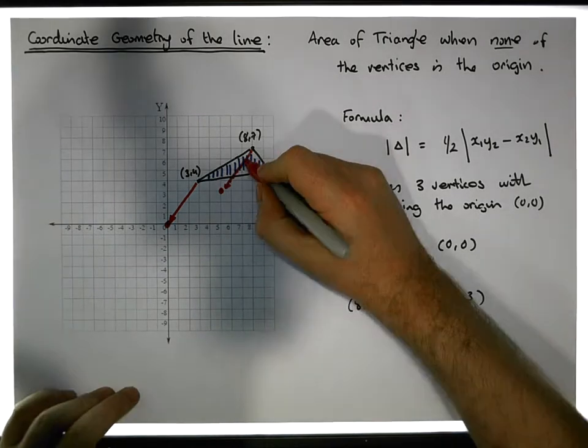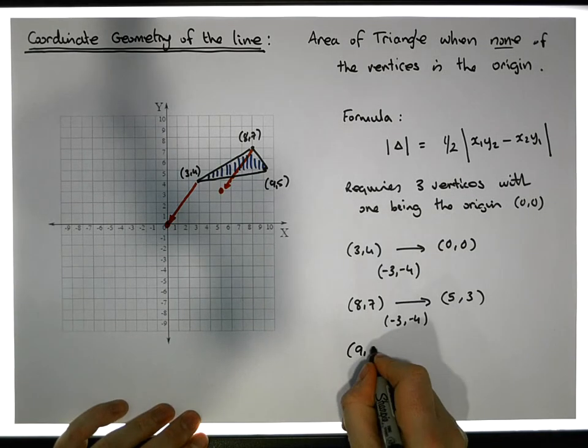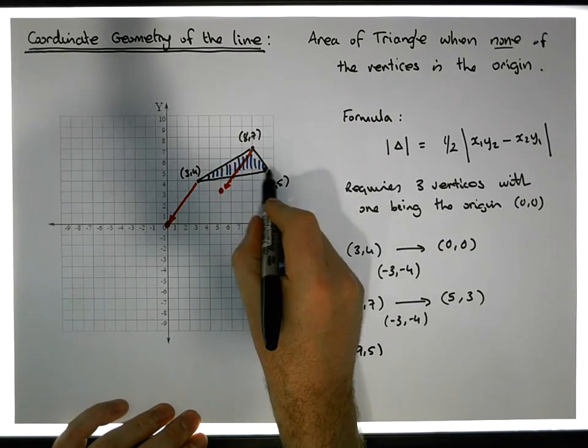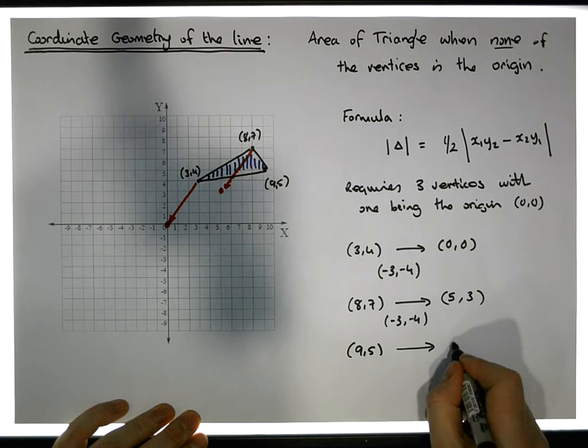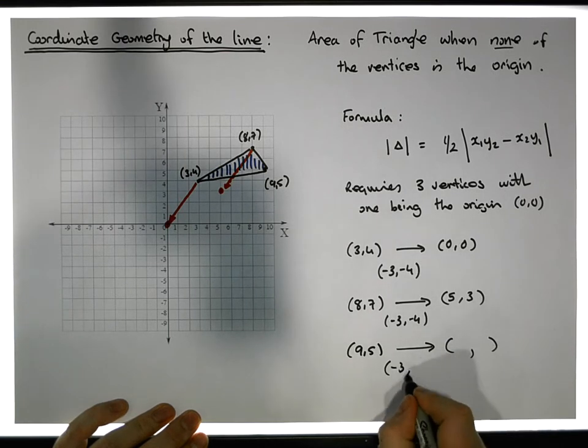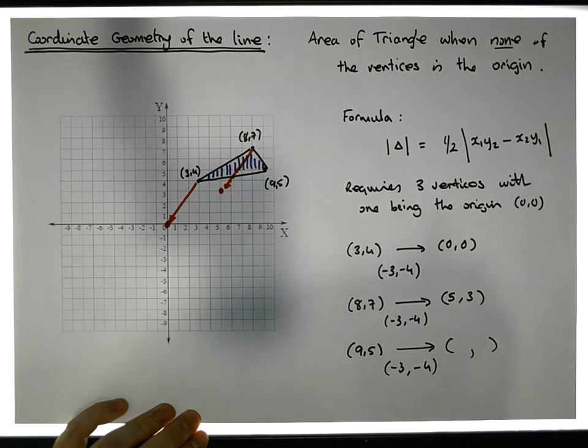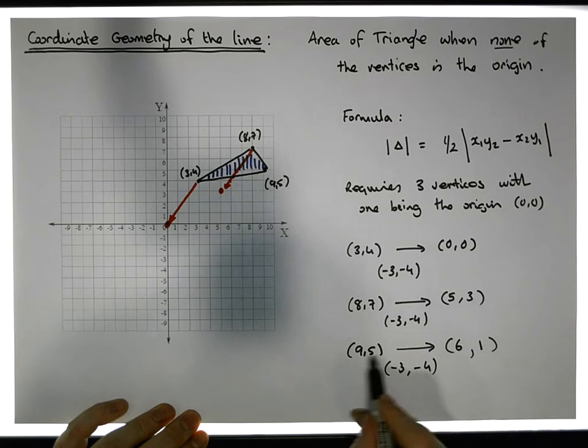What about 9,5? Let me do that with a full line here. So 9,5, which is this coordinate here, we need to find out where that goes to. Well, once again we apply the same translation, which is adding minus 3 onto the x and minus 4 onto the y.